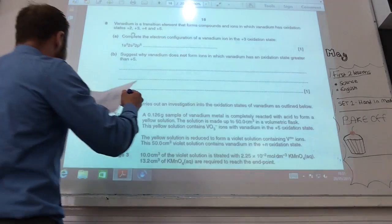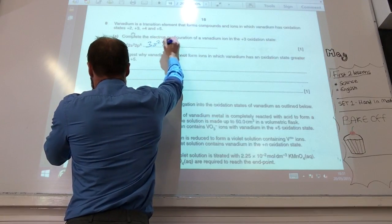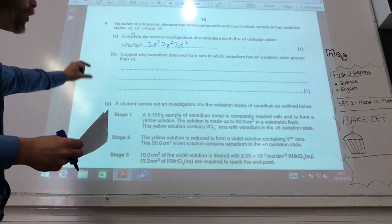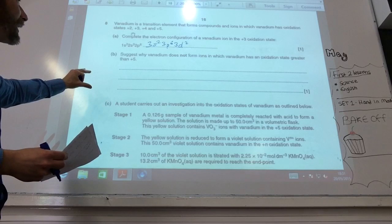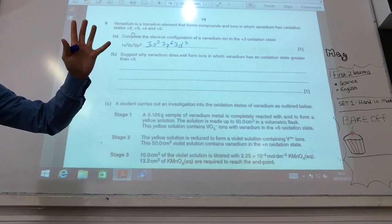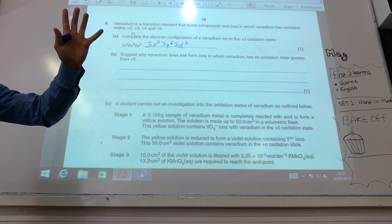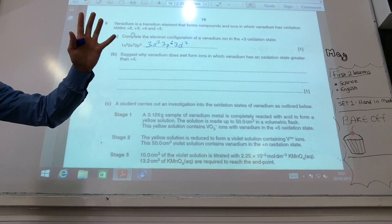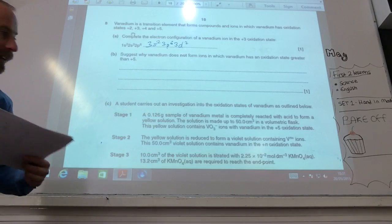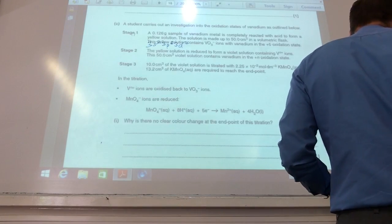Okay, so nice and easy for this one. You should be happy doing this. So, 3s2, 3p6, 3d2. Why does vanadium not form ions with an oxidation state greater than 5? A lot of you did this right. Vanadium, if it, vanadium's got five electrons, hasn't he, in his 4s and 3d subshells. If he went to six, he would be changing shells and it's just too great an energy change. So, that's why. He's used up all his electrons that he has access to.